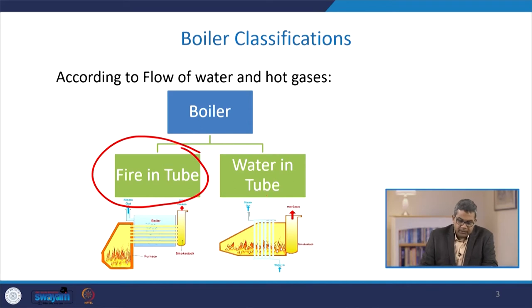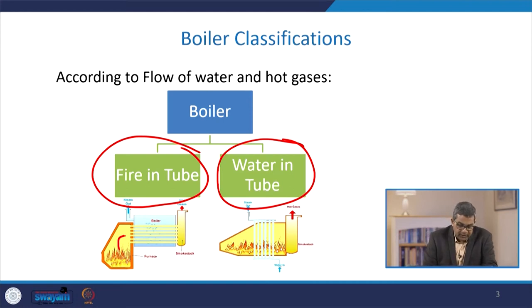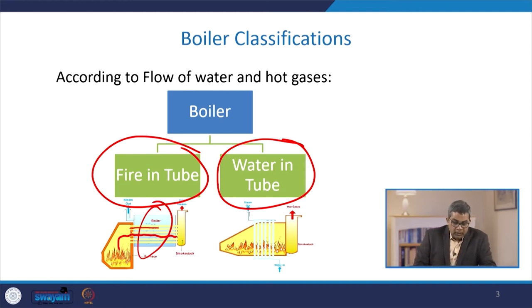Various boiler classifications have been suggested by various workers. One classification is based on the flow of water and hot gas — this may be fire-in-tube or water-in-tube, because basically the boiler is an assembly of tubes and shell. In fire-in-tube, the flue gases are within the tube system and the bundle of tubes is submerged in water. Upon heating, you can produce steam, so fire is on the tube side.